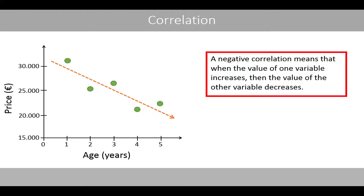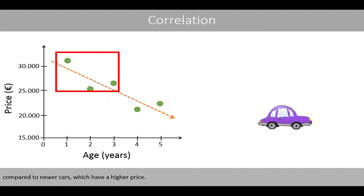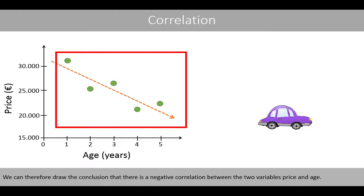A negative correlation means that when the value of one variable increases, then the value of the other variable decreases. This is true for this data since older cars have a lower price compared to newer cars, which have a higher price. We can therefore draw the conclusion that there is a negative correlation between the two variables price and age.